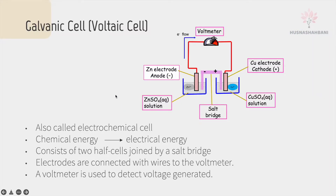A galvanic cell, also known as a voltaic cell or electrochemical cell, is a device in which chemical energy is converted to electrical energy.